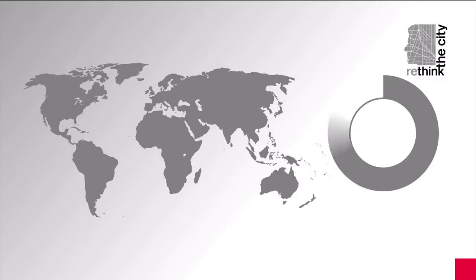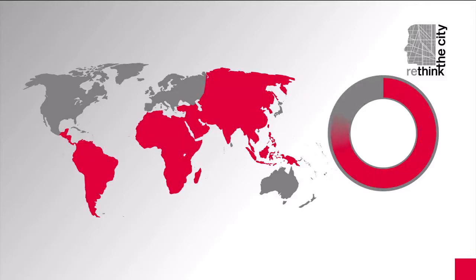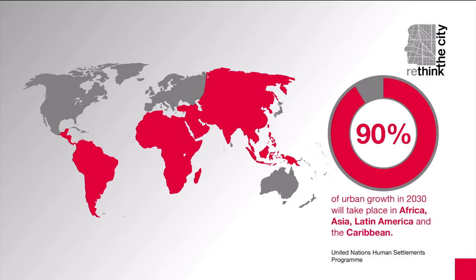Let's start by looking at the big picture. According to the United Nations Human Settlements Programme, 90% of urban growth in 2030 will take place in Africa, Asia, Latin America and the Caribbean.